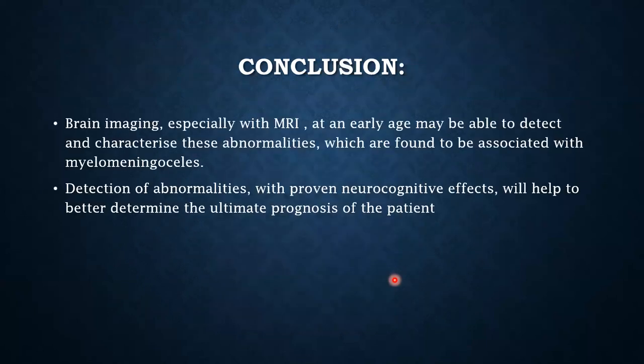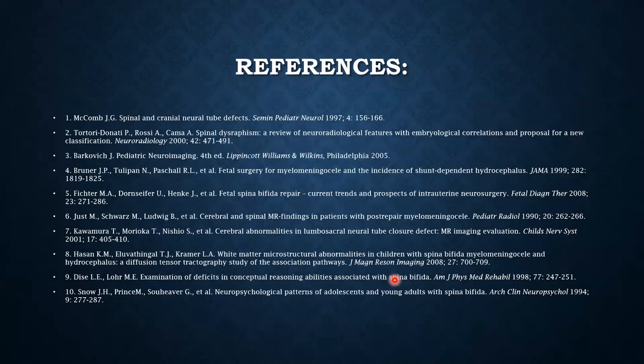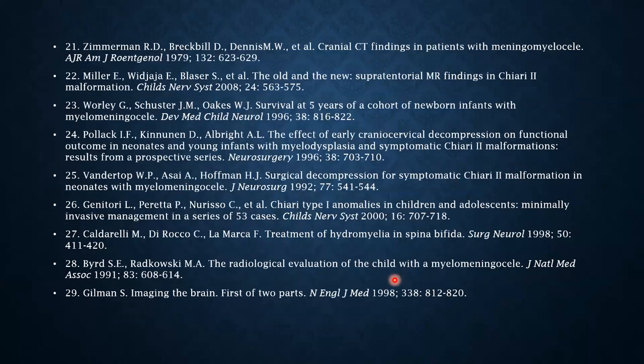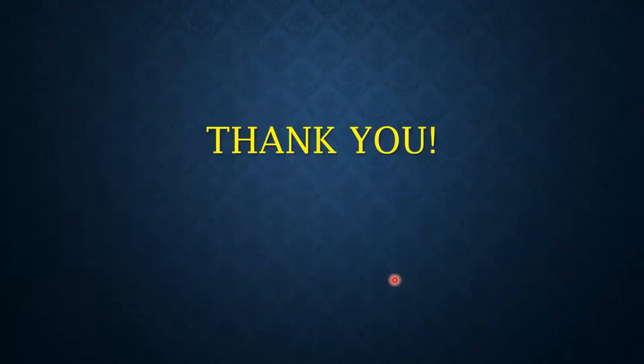In conclusion, brain imaging especially with MRI at an early age may be able to detect and characterize these abnormalities associated with myelomeningocele, and detection of these abnormalities with proven neurocognitive effects will help to better determine the ultimate prognosis of the infant. Thank you.